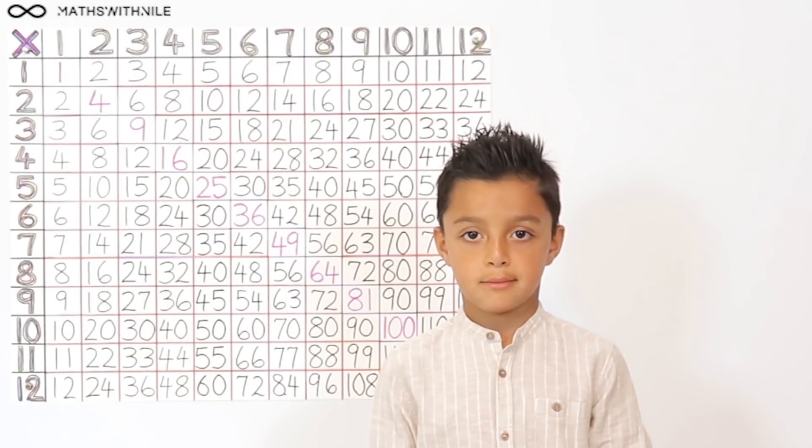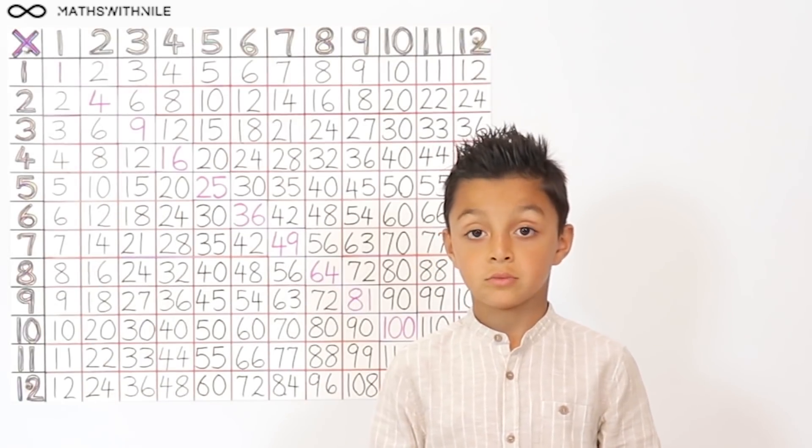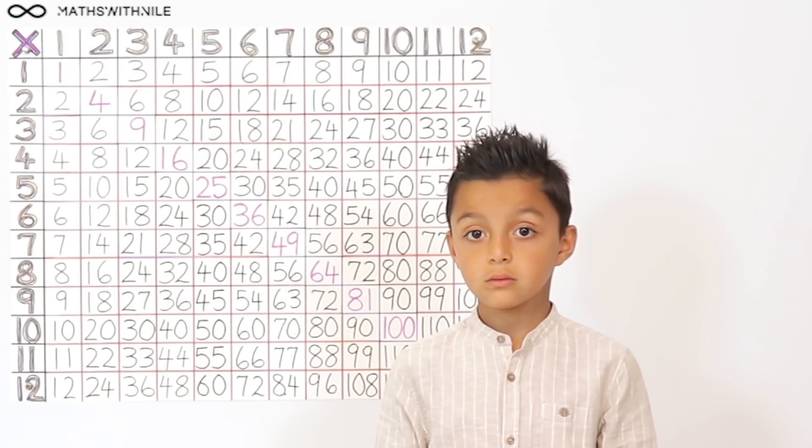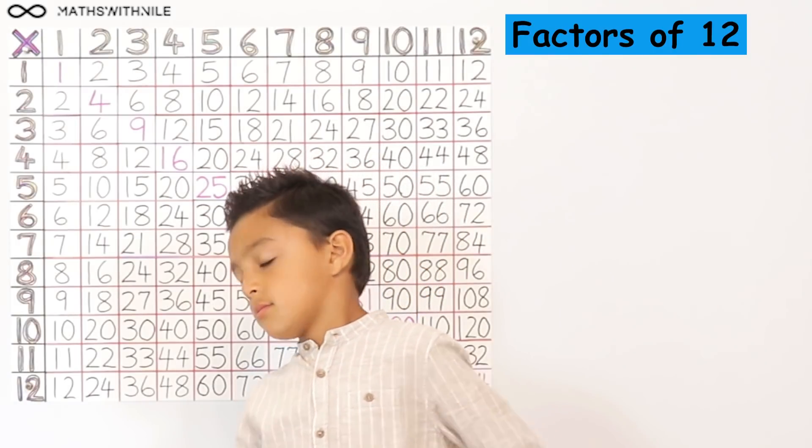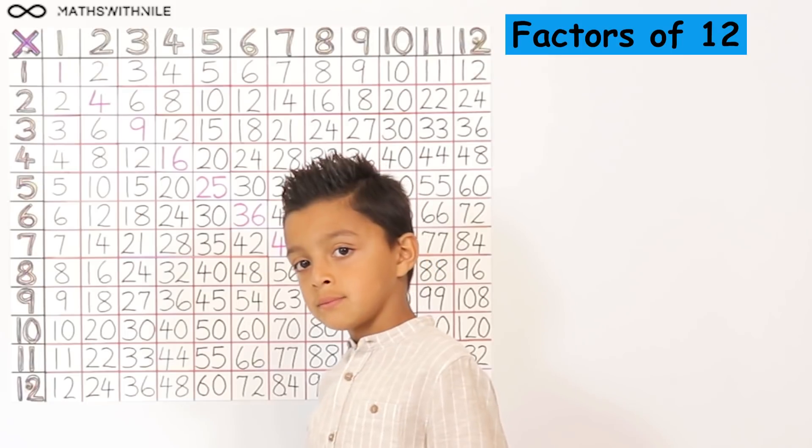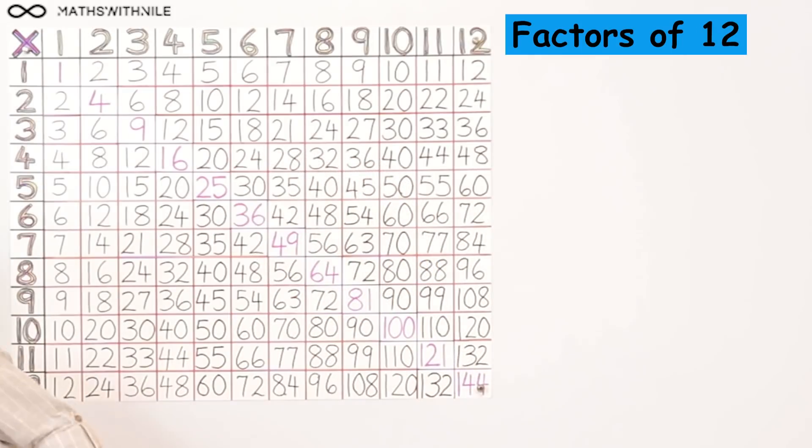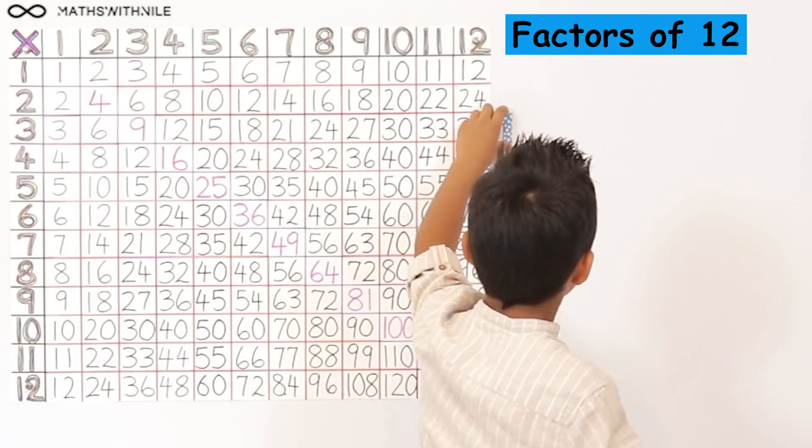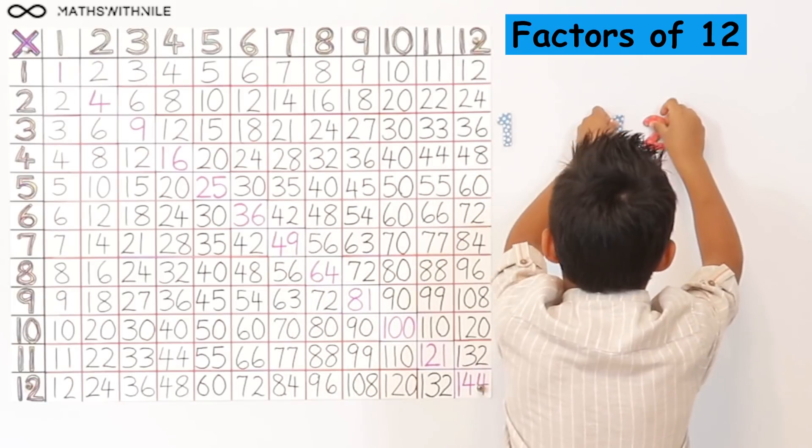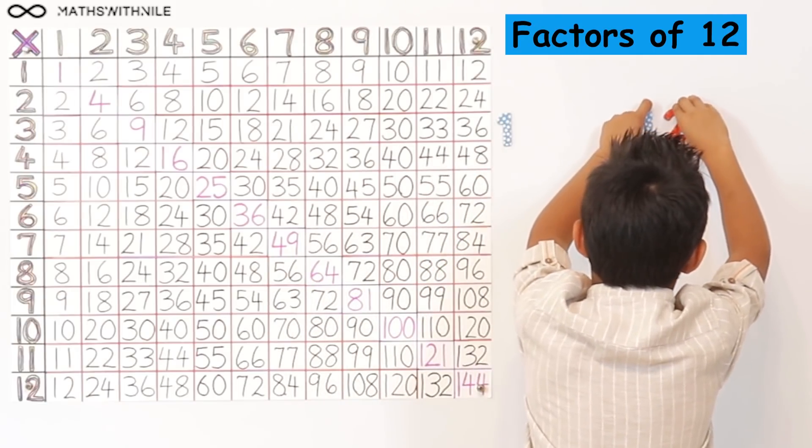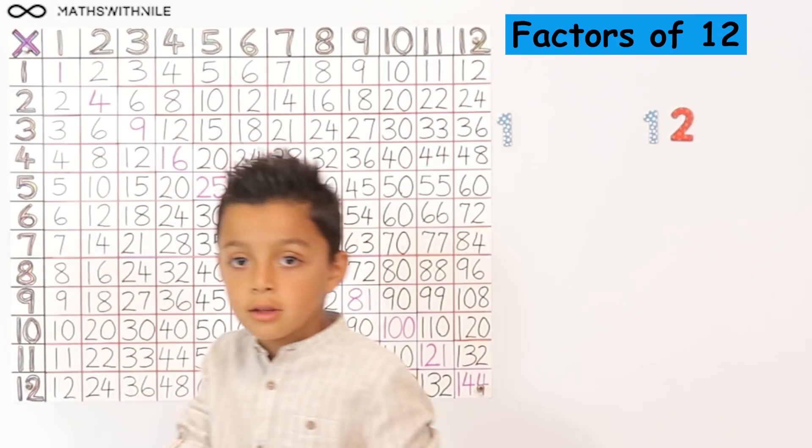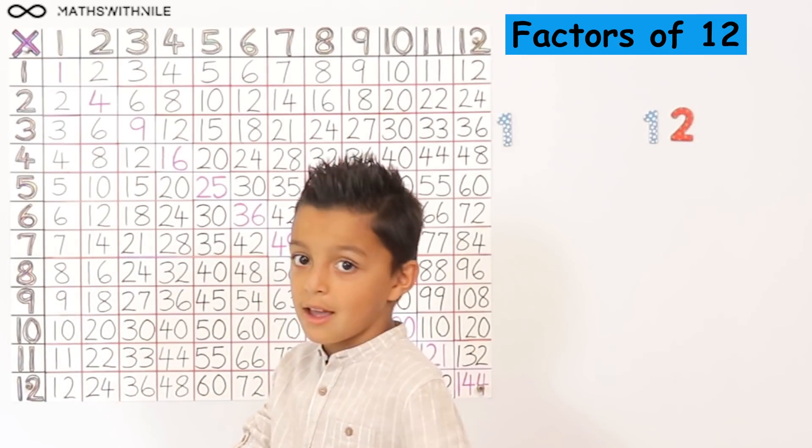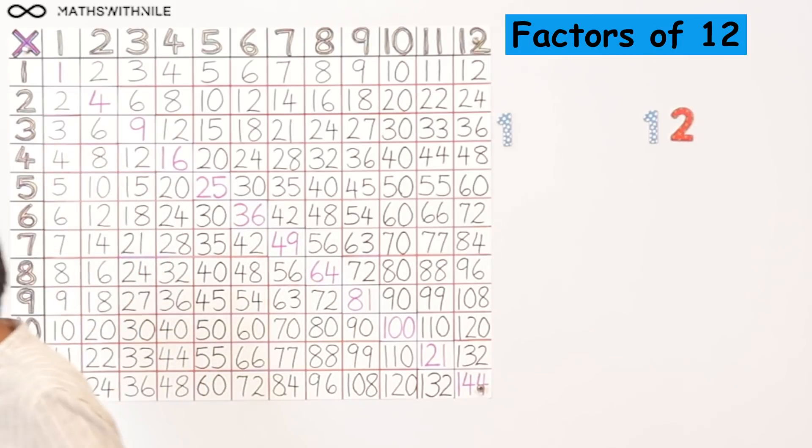Okay now, now that you know what factors are, I want you to find the factors of 12. 1. Good, and 1 times what will give you 12? 12. So let's get 1 and 12. Okay, 2 can go into 12. Can 2 go into 12? How many times? 6. Okay, so very good. So that means 6 can go into 12.